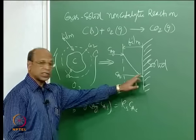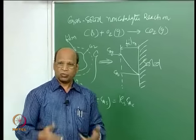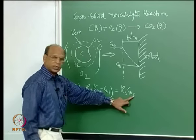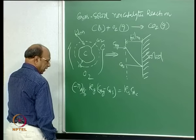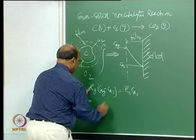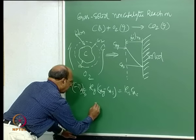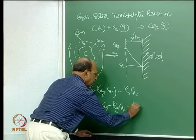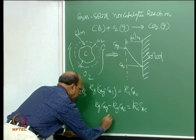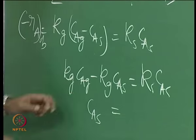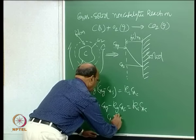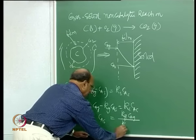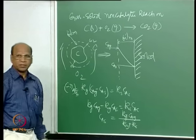Because measuring surface concentration is very difficult and costly, as engineers we should use techniques as simple as possible. Therefore, the best approach is to eliminate CAS from the equations. If we eliminate CAS by equating the two rate expressions KG(CAG − CAS) = KS·CAS, we get CAS equal to KG·CAG divided by (KG plus KS).